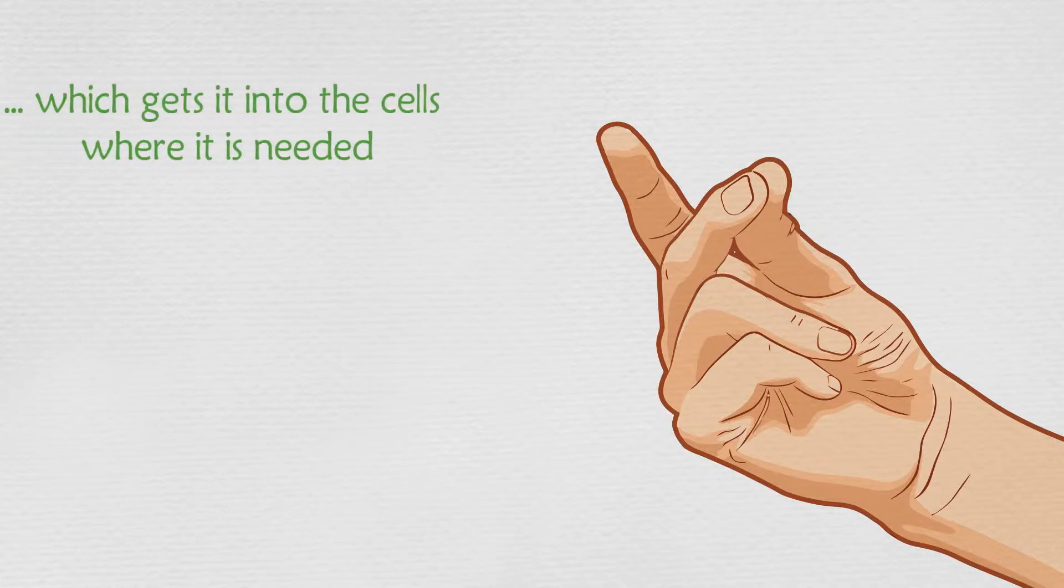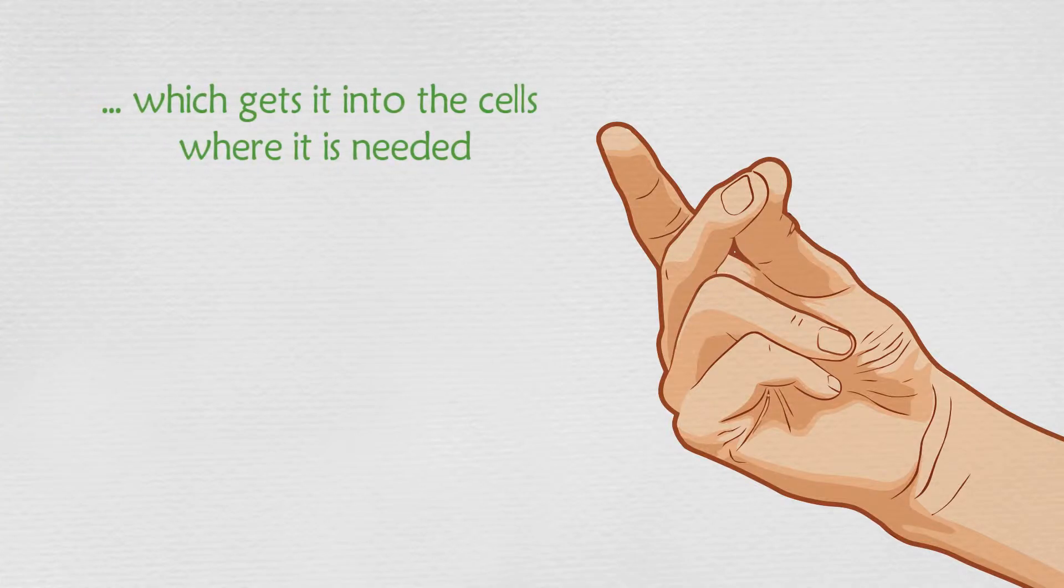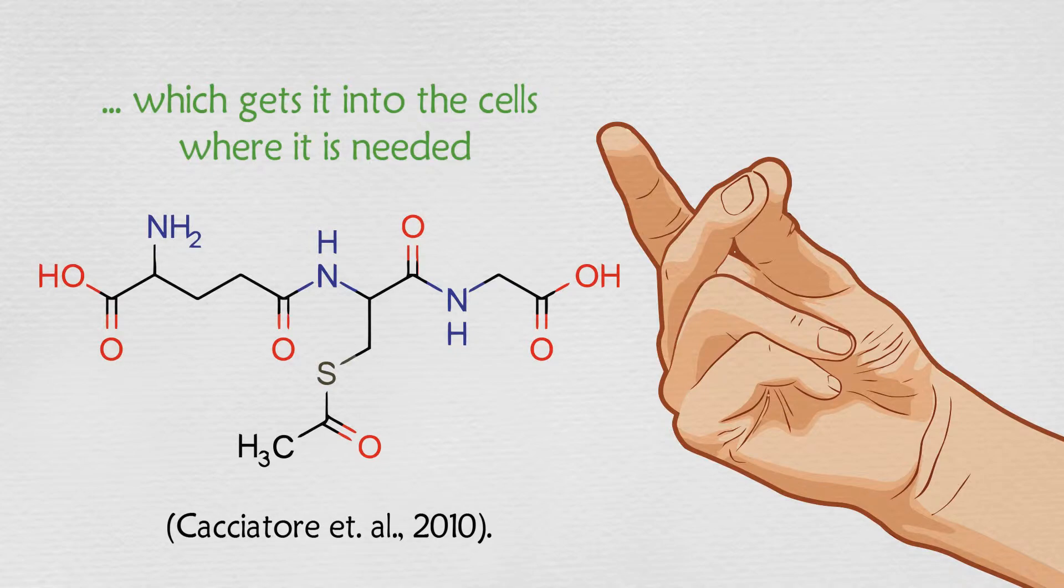It is now possible to supply glutathione in bioavailable form which gets it into the cells where it is needed, and that is by using S-acetyl glutathione.